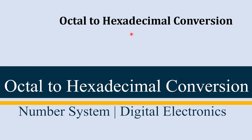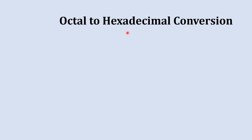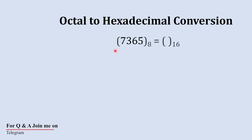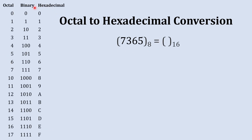Octal to hexadecimal conversion is just a two-step process, and in this video we are going to learn that. So without wasting time let's get started. Here we have this octal number and we are going to convert this octal number into a hexadecimal number, and to achieve this we are going to use the octal to hexadecimal conversion table.